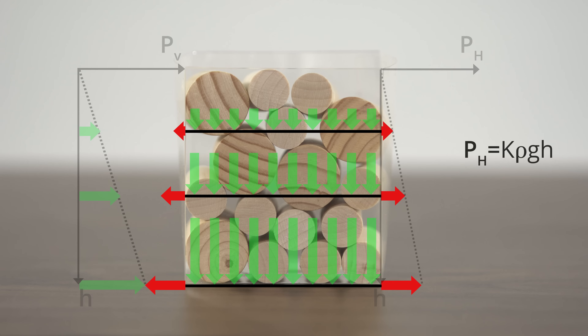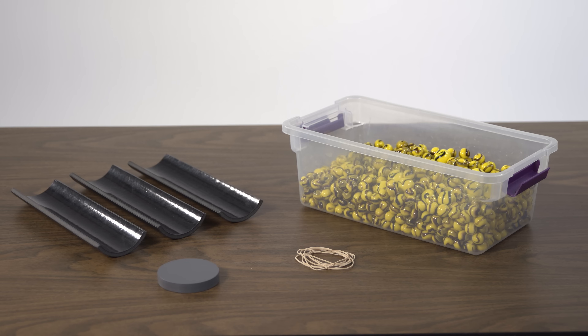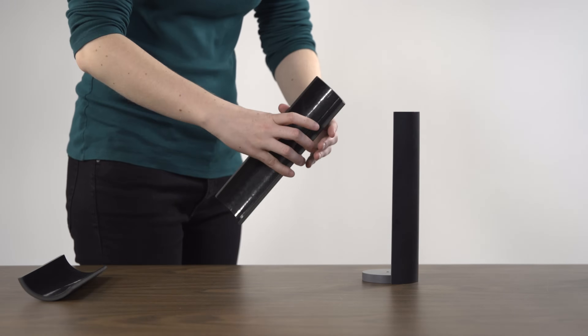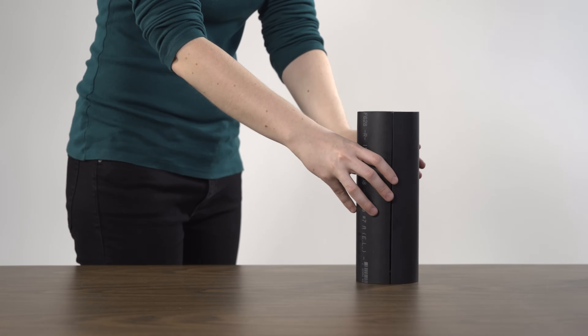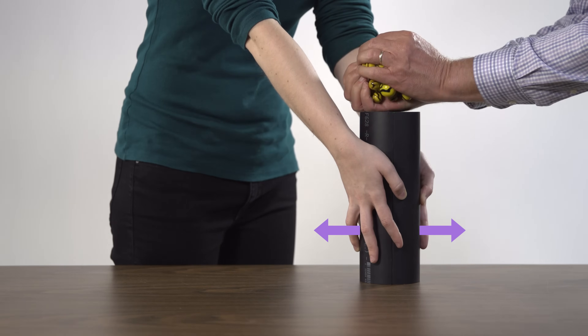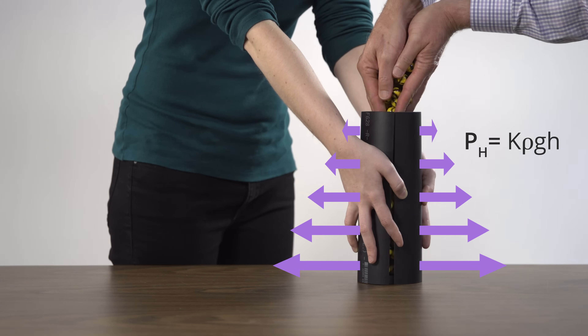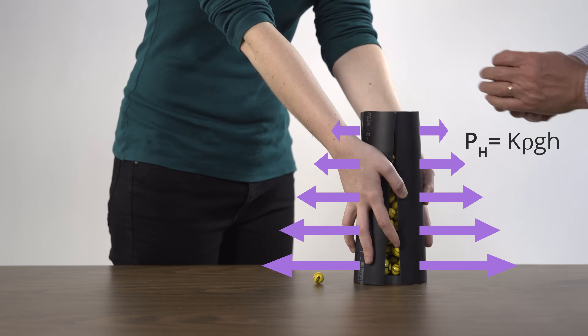As the first video in this series demonstrated, gravitational forces on liquids and granular materials give rise to horizontal pressures, and these pressures depend on depth. This silo model makes it easy to see and feel the effects of these horizontal forces. When we put the parts of the silo together and fill it with marbles, we can feel the outward forces and how they are greater near the bottom than at the top. This happens because the pressure inside the silo increases with depth.